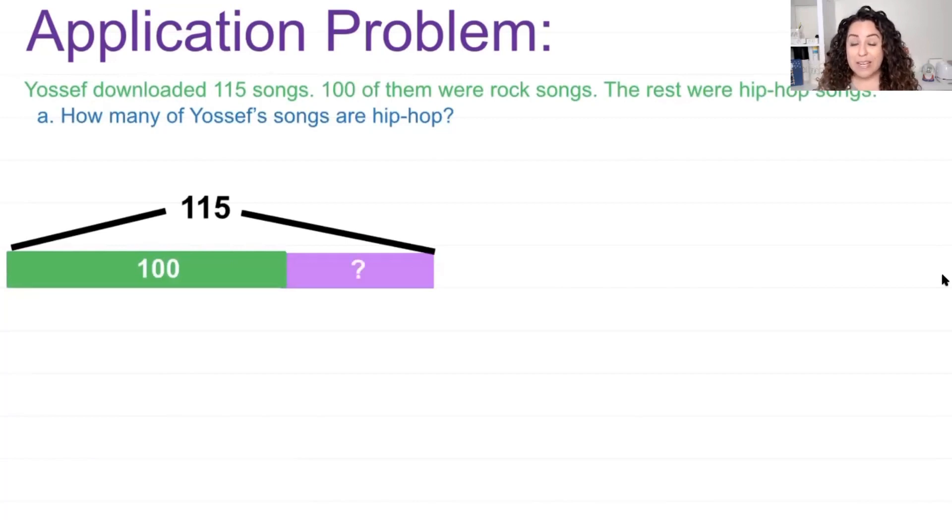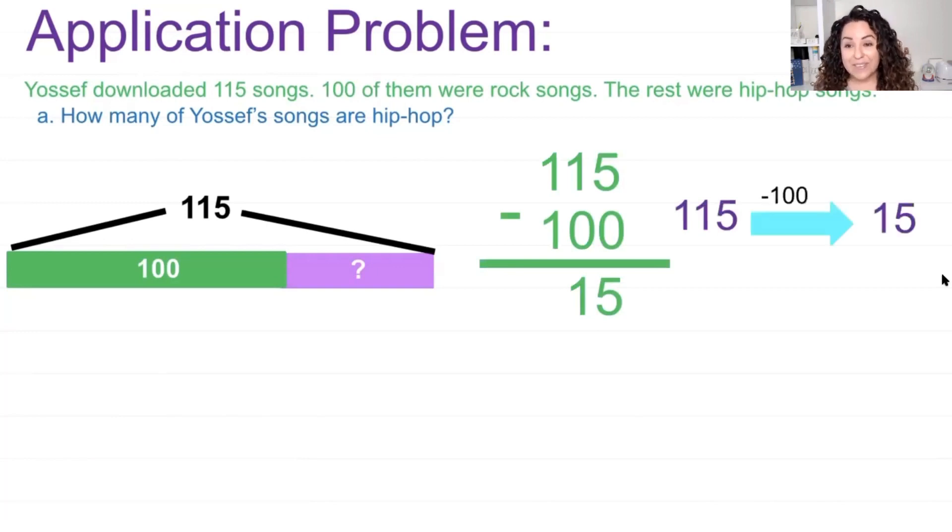I'm trying to find how many were hip hop songs. So I can just do this by subtracting 115 take away 100. That's pretty easy to subtract, it's 15. Or I can use an arrow way. I can say 115 and then I take away 100 and I get to 15. So 15 songs were hip hop.